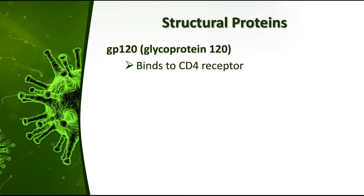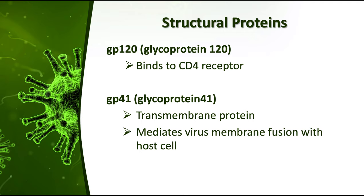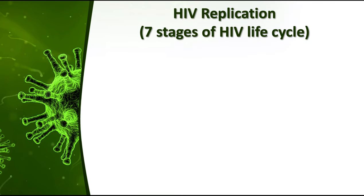The structural protein glycoprotein 120 is the one that binds to the CD4 receptor — it's similar to a lock-and-key method, where a particular key is only specific for a particular lock. That is how precise the HIV is: its key is only specific to the receptor found on CD4 cells. Glycoprotein 41 is the transmembrane protein that mediates the virus membrane fusion with the host cell. Upon binding of GP120 to the CD4 receptor, the viral envelope fuses with the host cell envelope.